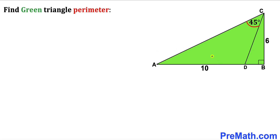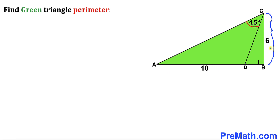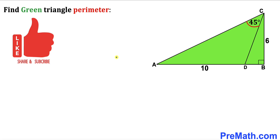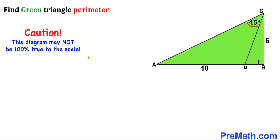Welcome to pre-math. In this video we have got this right triangle ABC along with this segment CD inside this triangle. This angle ACD is 45 degrees, segment AD is 10 units, and side length BC is 6. Our task is to calculate the perimeter of this green triangle ABC. Please keep in mind that this figure may not be 100% true to scale.